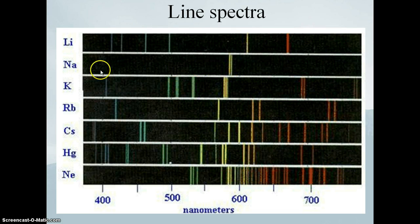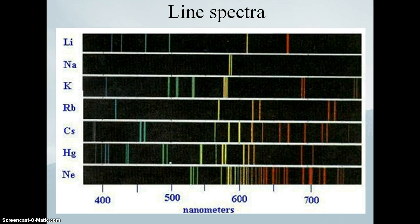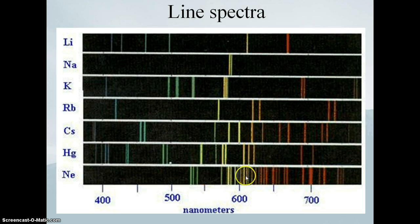Looking at sodium in the entire visible spectrum, there are actually only two lines that we see, and those two lines are very close in frequency — and they're yellow. That's why many streetlights are sodium lamps and have a yellowish tint to them. Potassium has several different lines, rubidium has several different ones, and neon has an incredibly large number. There are also frequencies outside of the visible range — to the left and to the right on this scale.